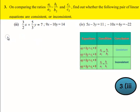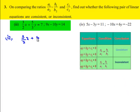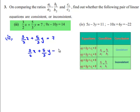Now coming to the third problem, the given set of linear equations are 3/2x + 5/3y = 7. This can be written as 3/2x + 5/3y - 7 = 0. This is equation number 1.